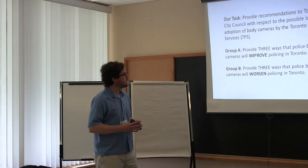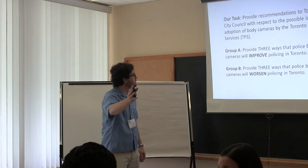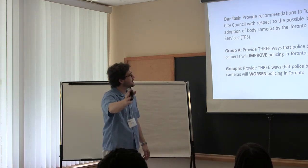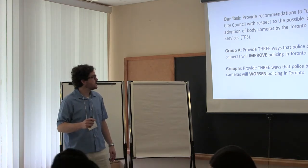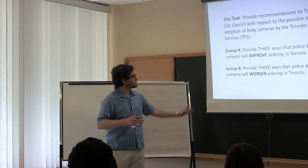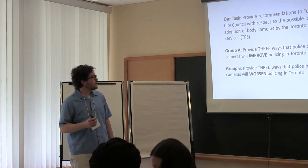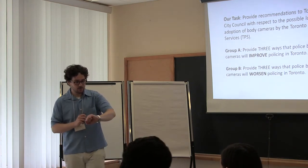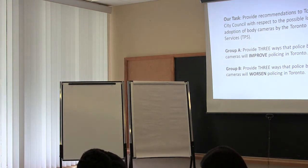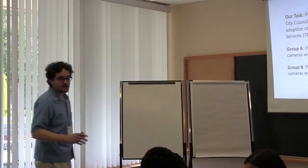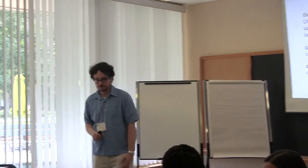And if you wouldn't mind, I'd like you to split into two groups. If you don't mind, I guess, group A on the left here, I'd like you to provide three ways that police body cameras will improve policing in Toronto. Group B to the right, please provide three ways that the police cameras will worsen policing in Toronto. I'll just give you a minute. And if you could elect a note-taker, which some of you have already done, and elect a presenter, that would be great. Thank you.